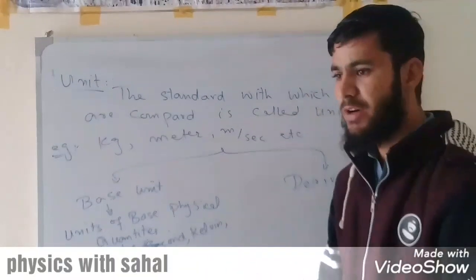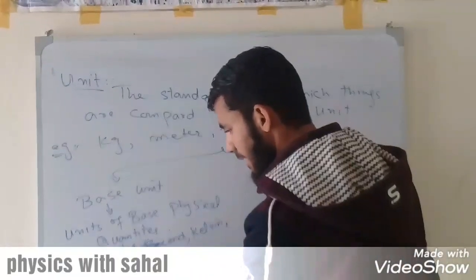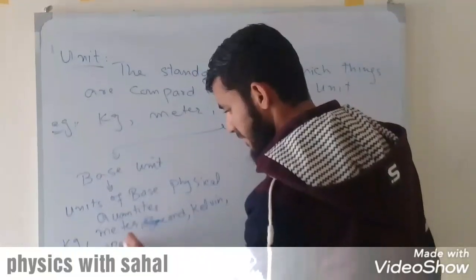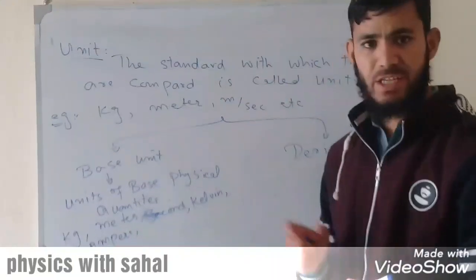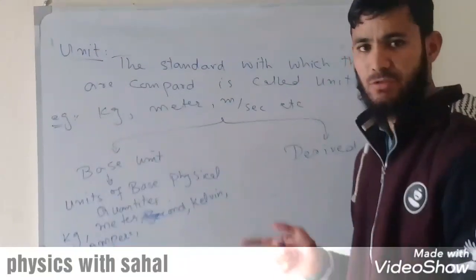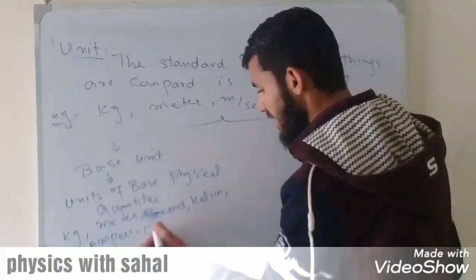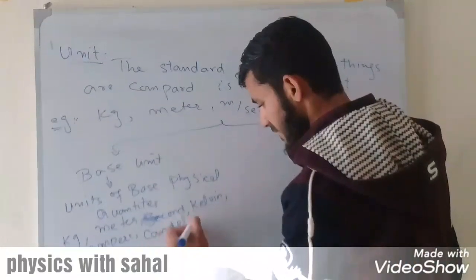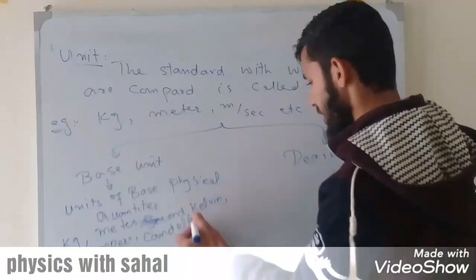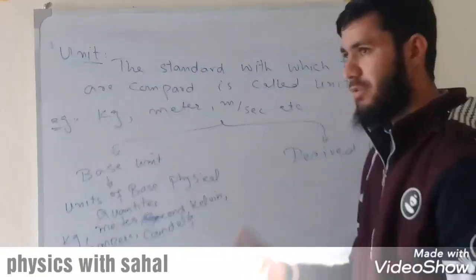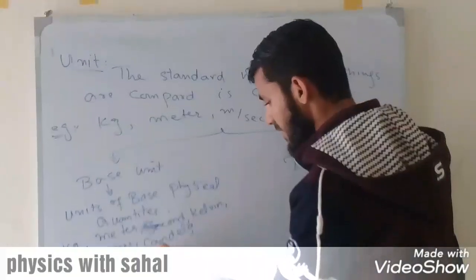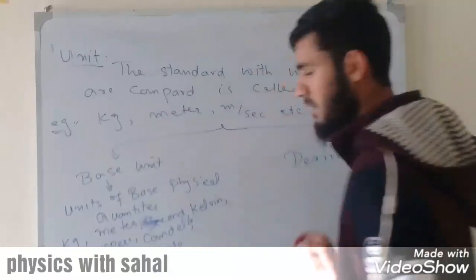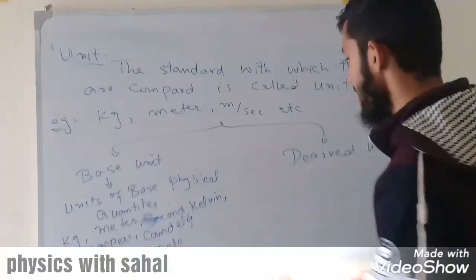We have current. We have intensity of light, so the unit of intensity of light is candela. And we have amount of substance, so the unit of amount of substance is mole. These are called base units.